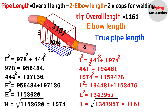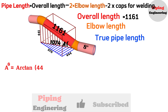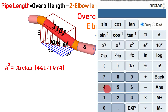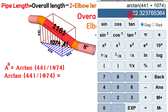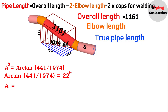Now let's calculate the elbow degree for these dimensions on this pipeline. To find the elbow degree we will use the trigonometric function. If we denote this angle as A, then A degrees equals the arctangent of 441 divided by 1074. Using a scientific calculator, the arctangent of 441 divided by 1074 equals approximately 22 degrees. So the cutting angle of these elbows is 22 degrees on the 8-inch pipeline.